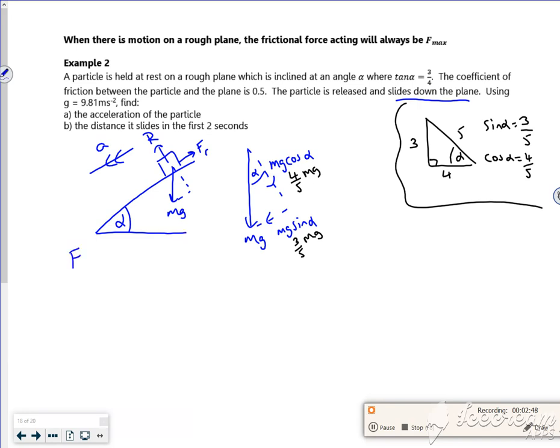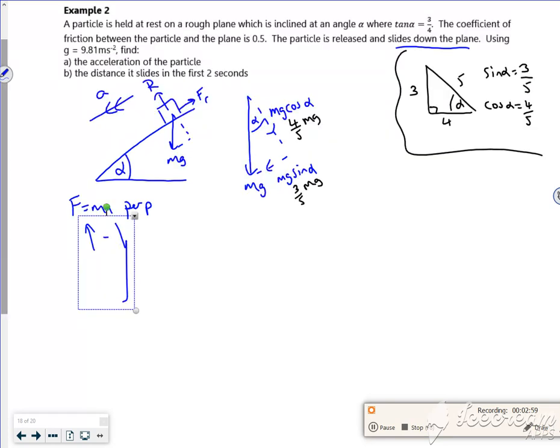If I do F equals ma perpendicular to the slope, that'll do it. I've got forces perpendicular minus R. I don't know what's going on with this board now. That's in equilibrium because it's not bouncing, it's not plowing through the slope.